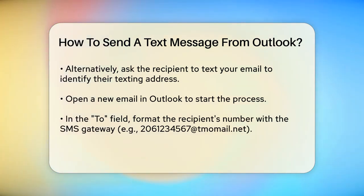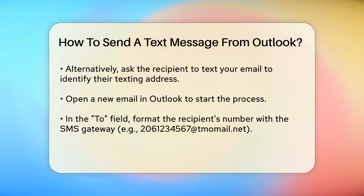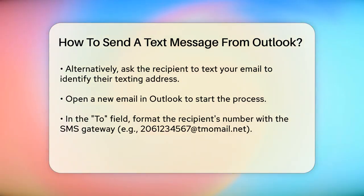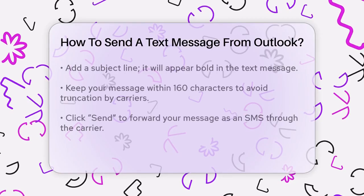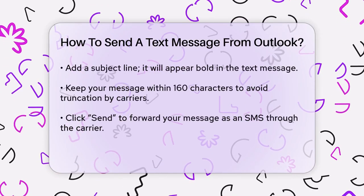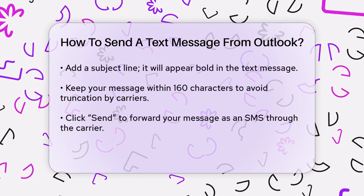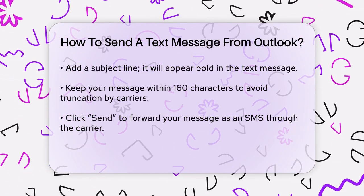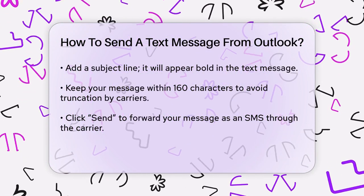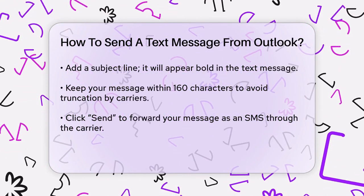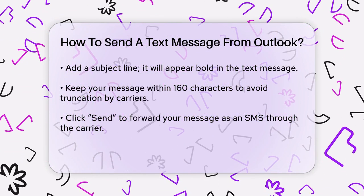Next, add a subject to your message. Whatever you put in the subject field will appear in bold when the text message is received. Then type your message in the body of the email. Keep in mind that standard text messages can only contain up to 160 characters. If your message is longer, some carriers might cut it short. Once you've written your message, click the Send button.